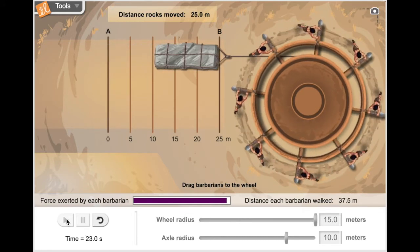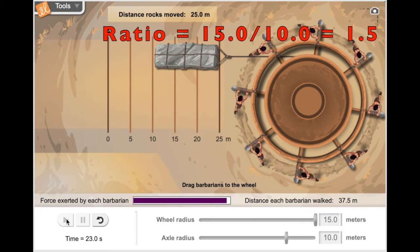Now you can see that each barbarian is walking 37.5 meters, but the rock only moves 25 meters. Now the wheel-to-axle ratio was 1.5. That's also the ratio of the distance that the barbarians walked to how far the load moved. 37.5 meters divided by 25 meters is also 1.5.